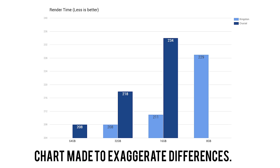I have the Kingston in a 4x8GB configuration and the Crucial in a 4x16GB configuration, so I can test from 8 all the way up to 64GB of RAM. For 64GB of the Crucial kit, I got a render time of 3 minutes and 23 seconds. For 32GB it was 3 minutes and 37 seconds, and for 16GB it was 3 minutes and 54 seconds.